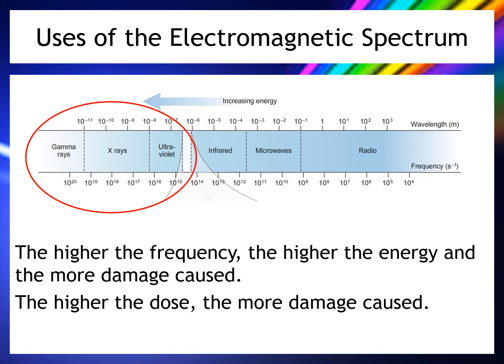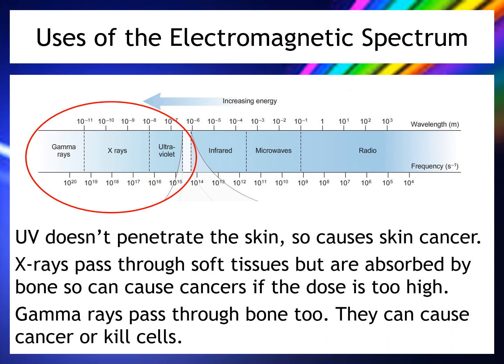It's also true that the higher the dose, the more damage caused — a high dose of X-rays does more damage than a lower dose. UV has the lowest energy of the three, so it generally doesn't penetrate the skin; any damage it causes is to the skin, which is why ultraviolet causes skin cancer.